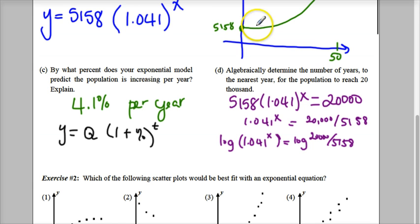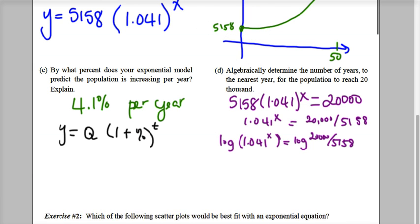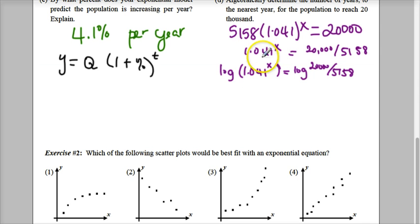Now I'm going to use the power rule. Let's see if I have some space here. I am going to use the power rule. This becomes X log of 1.041, and I'm bringing all of this down, 20,000, 5158.